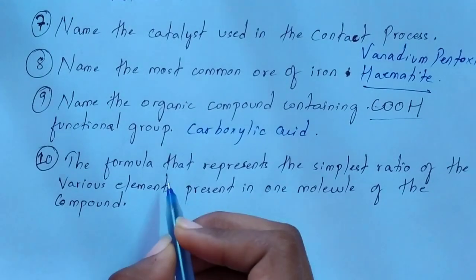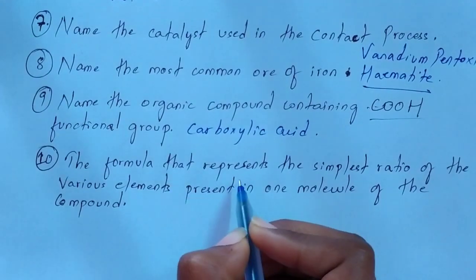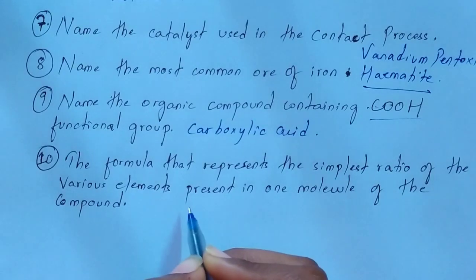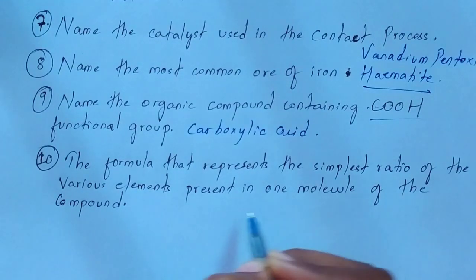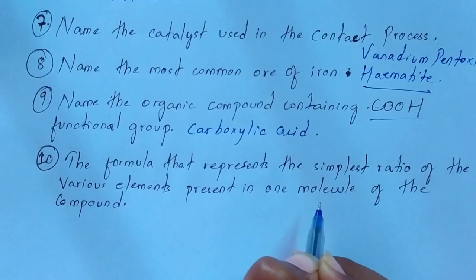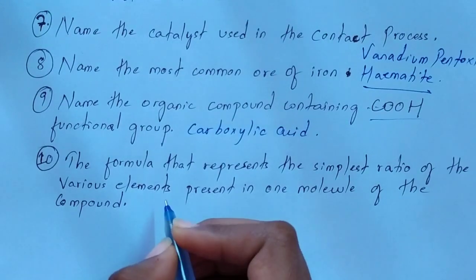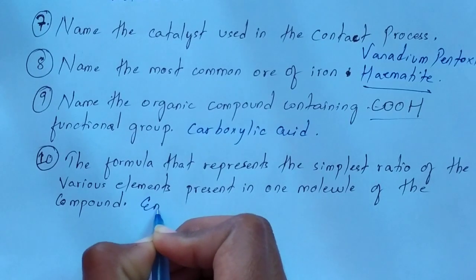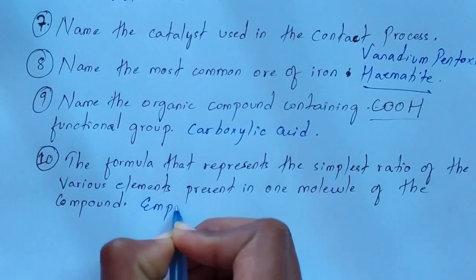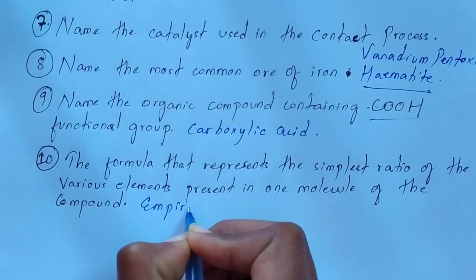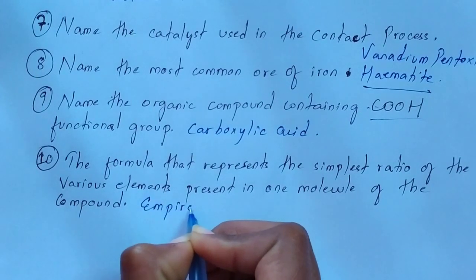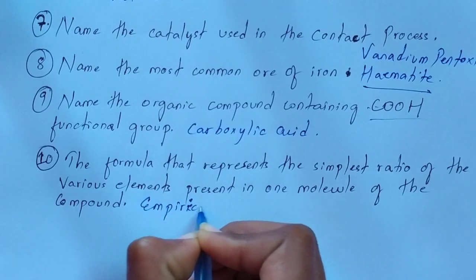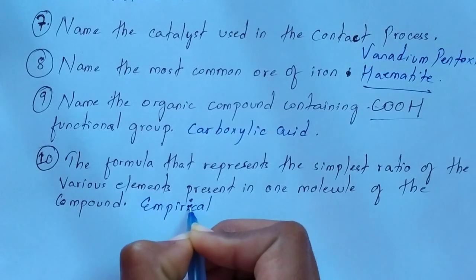The next and last question: name the formula that represents the simplest ratio of the various elements present in one molecule of a compound. This is known as the empirical formula.